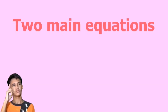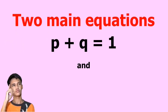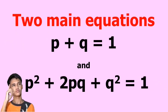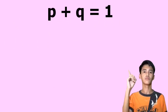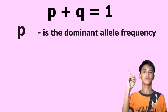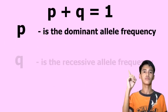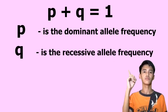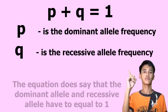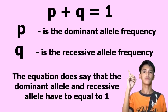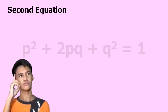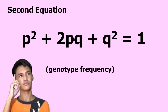And now let's explore the math. There are two main equations that we will focus on. P plus Q is equal to 1, where P is the dominant allele frequency and Q is the recessive allele frequency. The equation says that the dominant allele and recessive allele frequencies have to equal 1. The second equation deals with the genotype frequency.